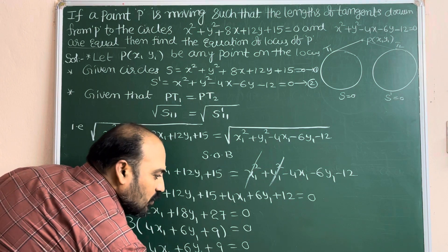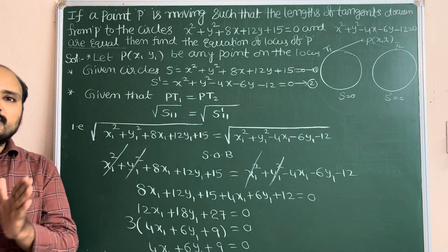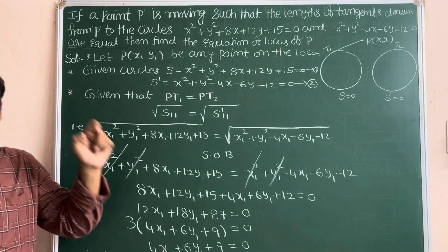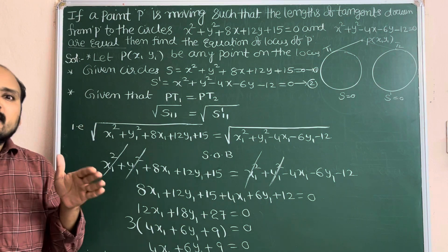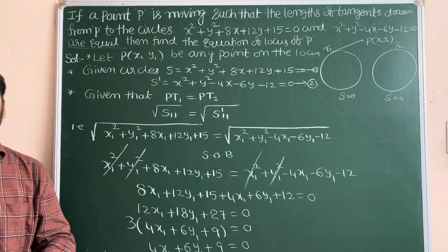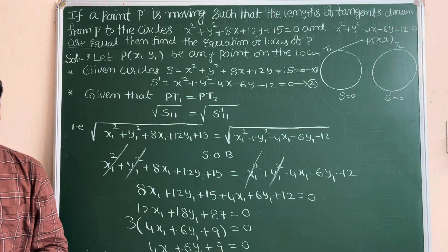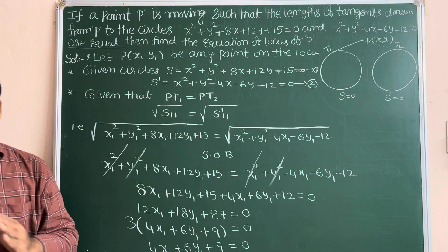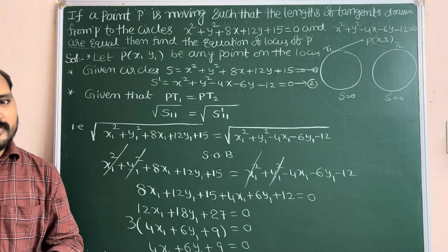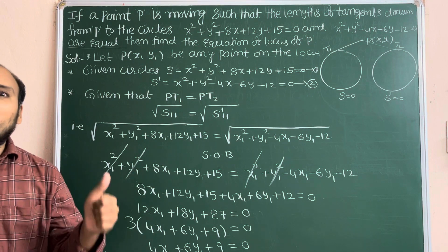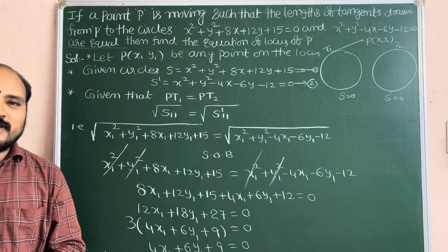I hope you understand, dear students. Based on this concept of length of tangents — whether they are equal or in a ratio of 2:3 — two questions are possible. We may expect one four-mark question in the public examination, either in the Telangana or Andhra Pradesh intermediate board. Thank you for watching our channel. Please like and share with your friends and relatives. Thank you all.